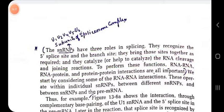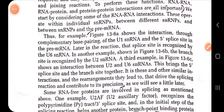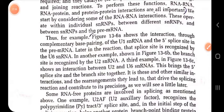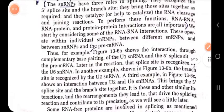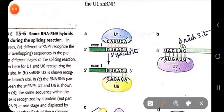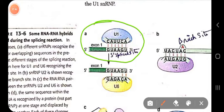Let us consider some of the RNA-RNA interactions. In figure 13.6a, the U1 snRNP has an snRNA sequence that base pairs with the five prime splice site very well. U1 snRNP recognizes the five prime splice site by complementary base pairing between its snRNA and the five prime splice site region of the mRNA.